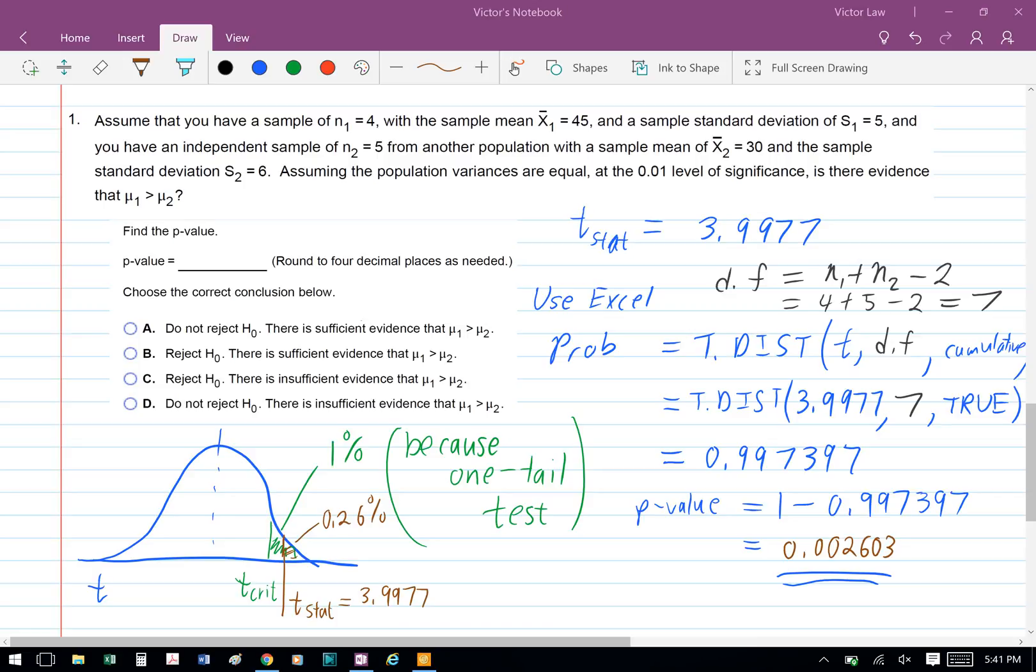Notice that if you look at the diagram, we have 1% for the t-critical. The reason we don't have to divide it by 2 is because this is a one-tailed test.